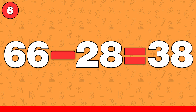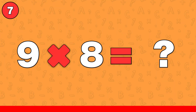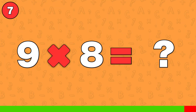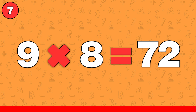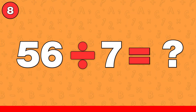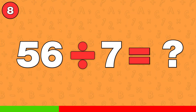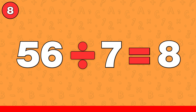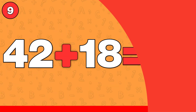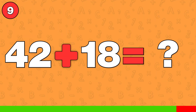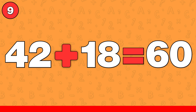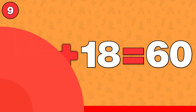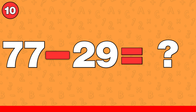The answer is 38. 9 times 8. The answer is 72. 56 divided by 7. The answer is 8. 42 plus 18. The answer is 60. 77 minus 29.